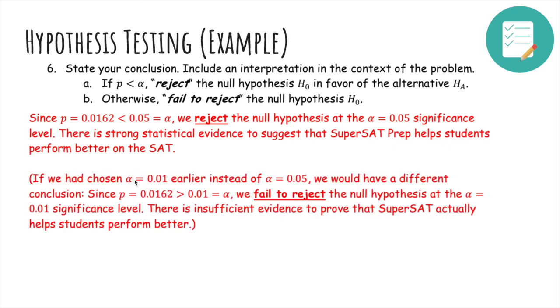Notice if we had chosen α = 0.01 instead of 0.05 earlier, we would have a different conclusion. It would be something like since p = 0.0162, which is greater than α, we fail to reject the null hypothesis at the α = 0.01 significance level. And there's insufficient evidence to prove that SuperSAT Prep actually helps students perform better.